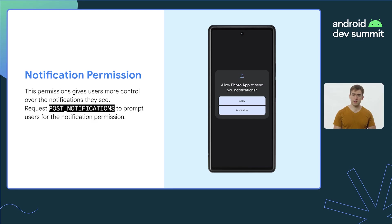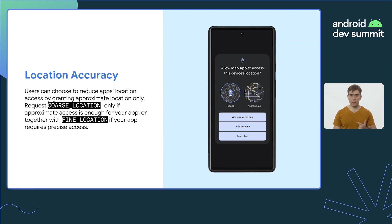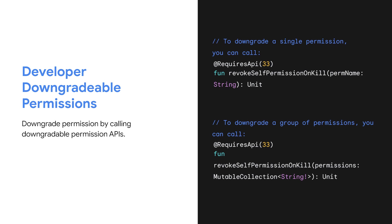To enhance user privacy, Android has added the notification permission to give users more control over the notifications that they see, the coarse and fine location permission split, allowing users to provide apps their approximate location without giving their exact moment-to-moment location, and developer downgradable permissions which allow apps to revoke permissions that they need only for a short time. To downgrade permissions, call the Revoke Self Permission on Kill API that's available for apps targeting SDK 33 and above.